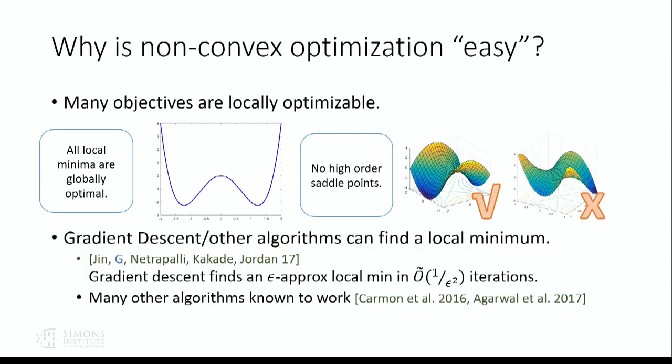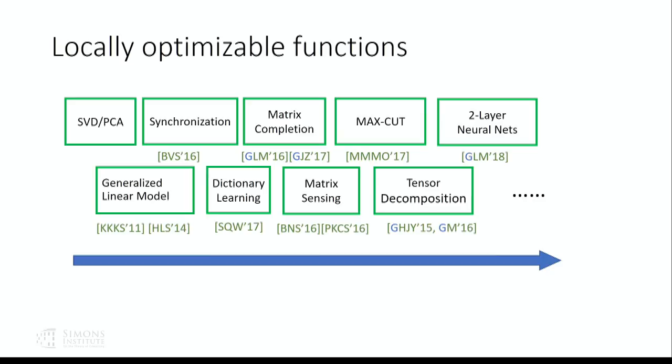The remaining question is: for what problems are the objectives locally optimizable? Throughout the years, many researchers have proved several cases. Starting from the canonical example of principal component analysis — a classical non-convex objective with no bad local optimal solution — people were recently able to prove that problems such as matrix completion, tensor decomposition, and even some versions of neural networks have these nice locally optimizable objective functions.